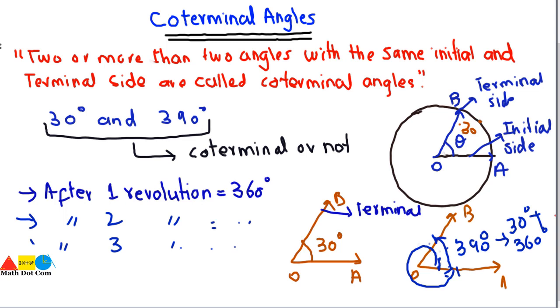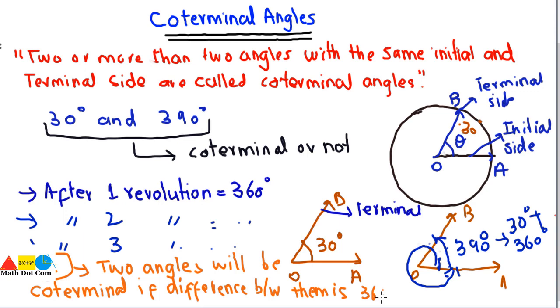If the two angles have the difference of 360 degrees, in terms of degrees, in terms of radians it will be 2π. Then we can say that the two angles are coterminal. So note that you have to keep in mind: two angles will be coterminal if the difference between them is 360 degrees or 2π radians, or they are multiples of it.